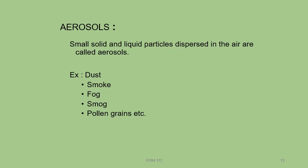Now we discuss aerosols. What are aerosols? Small solid and liquid droplets dispersed in the air are called aerosols. Examples include dust, smoke, fog, and pollen grains. Pollen grains are released by trees and flowers — they are small particles dispersed in the air.